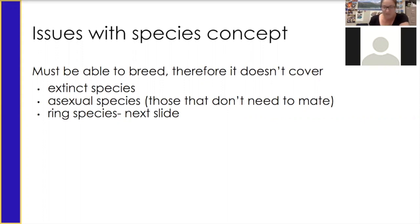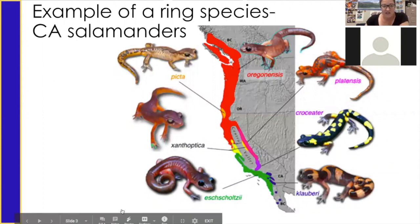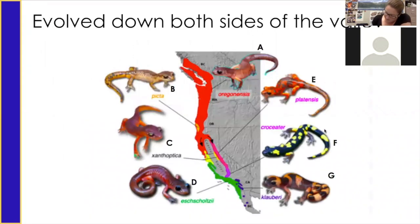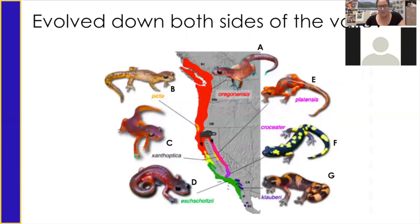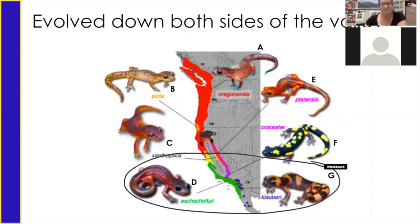Another issue is something called a ring species. An example of a ring species is California salamanders. These salamanders evolved from the north to the south. Historically, the most primitive ones are located here, and then evolution happened down both sides of the valley. So organism A evolved into organism B, which evolved into C, which evolved into D. Now D and G live in the same range, in overlapping ranges.